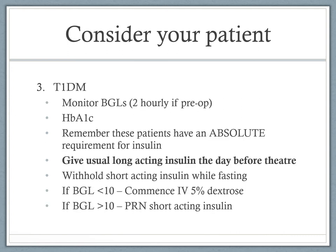The next scenario is a type 1 diabetic. Again, monitor blood glucose levels and do a HbA1c to assess previous control. The important thing to remember is these patients have an absolute requirement for insulin. If the patient is going to theatre, it is very important to give their long-acting insulin the day before and measure blood glucose levels two-hourly. It's reasonable to withhold short-acting insulin while fasting and monitor BGLs. If they drop below 10, commence IV dextrose; if greater than 10, give short-acting insulin PRN. The endocrine team should be involved to review the patient.